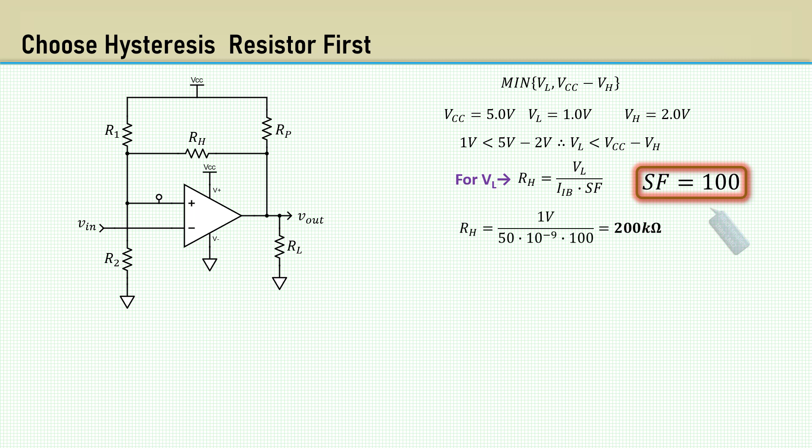With an input bias current of 50 nanoamps, RH comes out to 200k. Note, that's much smaller than 1 meg.